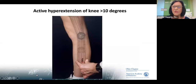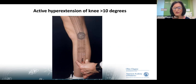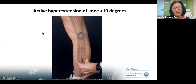Can you hyperextend your knees? Another term for this is genu recurvatum. That again needs to be 10 degrees, but you can see this without a goniometer when observing them in a standing position. The last maneuver brings the Beighton score up to nine if you have all of them.